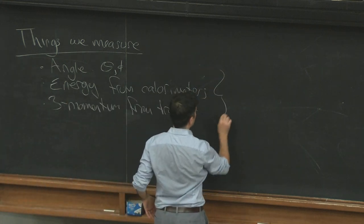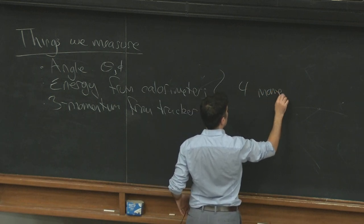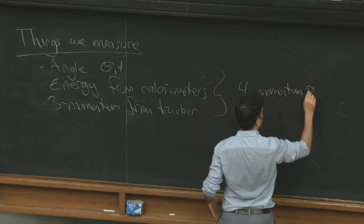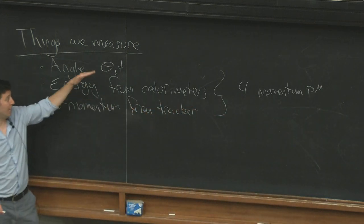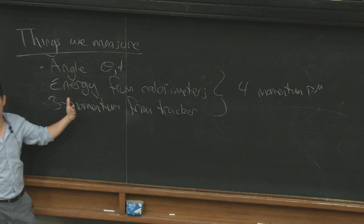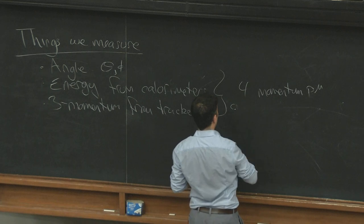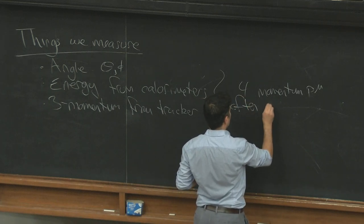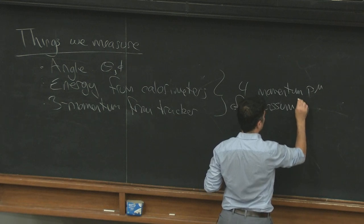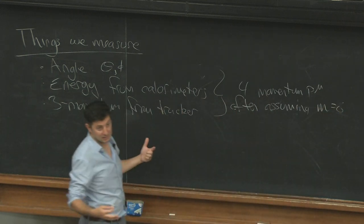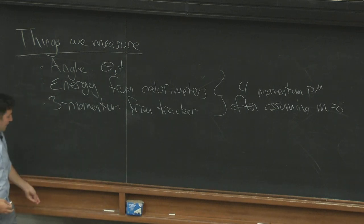We combine these things to produce the four-momentum. But to construct the four-momentum, if we don't actually have information about four degrees of freedom, we have to make some assumption about the mass — often assuming m equals zero, or if it's not zero, you can assume it's a pion mass, something like that. These are the basic things that we have access to.